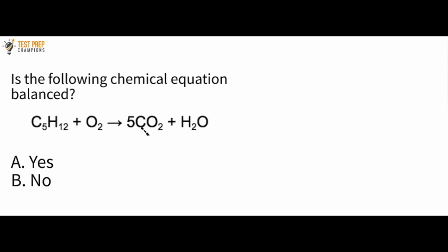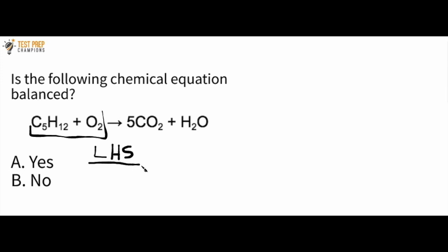We would say C5H12 reacts with O2 to yield 5CO2 and H2O. The most important thing is to determine if this is balanced or not. The left-hand side is everything to the left of this arrow. So let me write LHS — left-hand side — and we've got carbons, we've got hydrogens, and we've got oxygens.